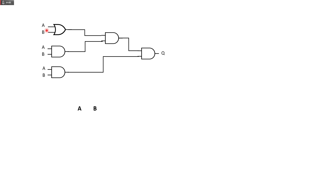Next, we are going to count the number of gates. The counting goes in a zigzag pattern — starting from top to bottom, then moving to the right, top to bottom again, and so on. So this will be 1, 2, 3, 4, and 5. We are going to write these numbers down: 1, 2, 3, 4, 5.